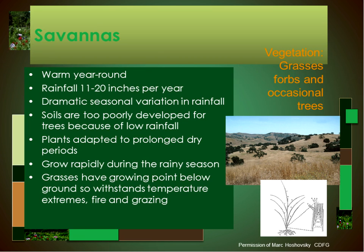Vegetation generally is grasses with occasional trees. In this picture I show you a California oak savanna, which is similar to some of the African savannas in terms of their basic characteristics. As you can see, these areas tend to support lots of burrowing animals and also grazing animals.